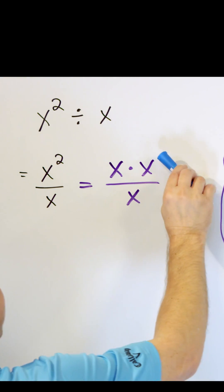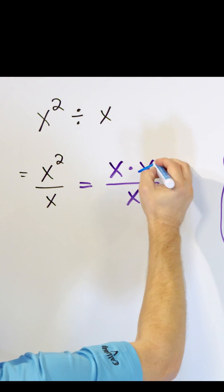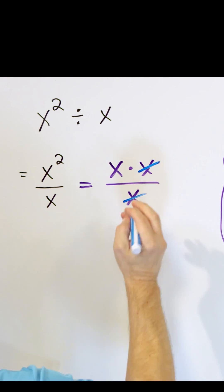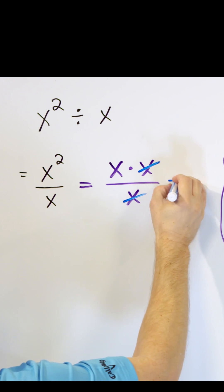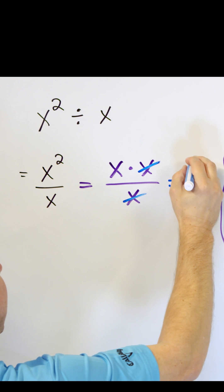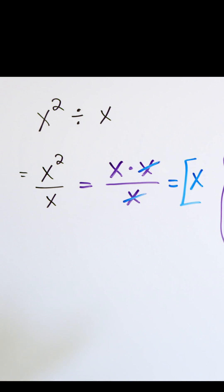So you see, I have the same thing. One of these x's in the numerator and also one of these x's in the denominator, and they cancel each other away. You can think of them dividing away, giving you 1, and the only thing you have left is a single x, and so that is the answer to the question.